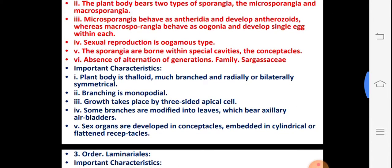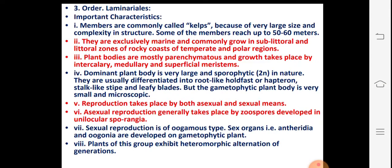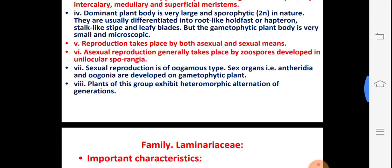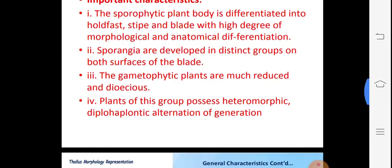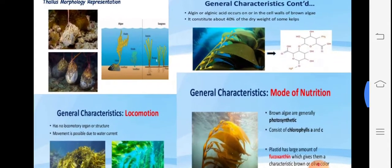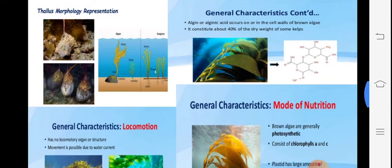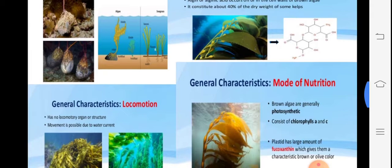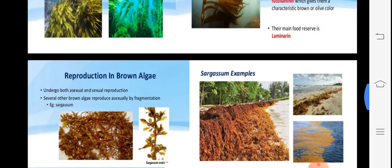For order Laminariales, genus Laminaria: the plant body is sporophytic, showing a holdfast type with leaf blades. Sporangia develop in distinct groups on both surfaces of the leaf blade. Generally alginic acid is present in Laminaria. The main pigment is fucoxanthin and there is locomotion. These photographs show thalli of different forms.